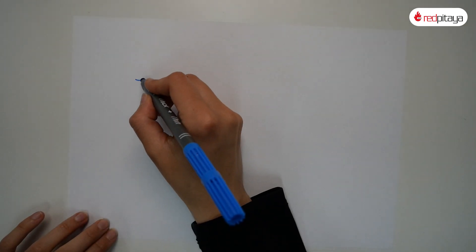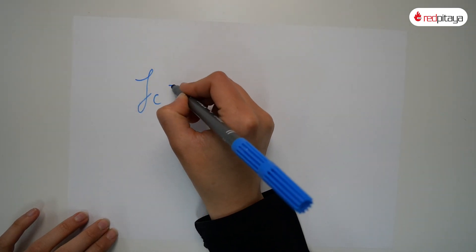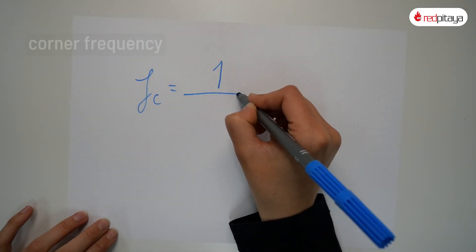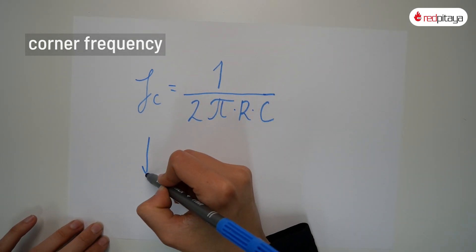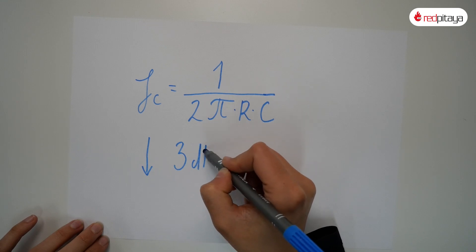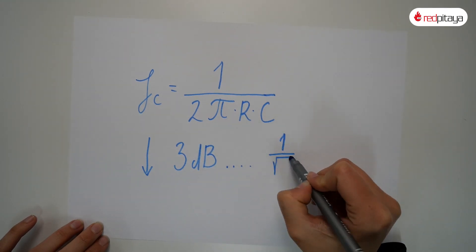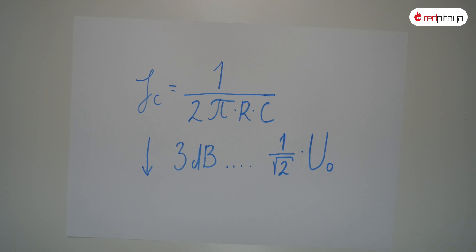There is one specific frequency I would like to point out — it's called the corner frequency. Here, the signal drops by 3 dB, that is to 1 over the square root of 2 of the original amplitude. Corner frequency for both low-pass and high-pass filters is the same. Phase shift for high-pass filters is positive, and attenuation is the same but flipped around. We use both plots to visualize a filter's characteristics.